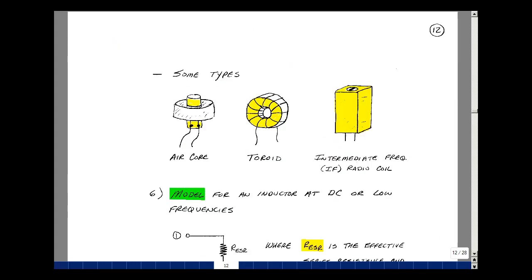What's shown here are some sketches of various types of inductors. This one's called an air core inductor, where the windings of the coil are around a paper tube. This one's called a toroid inductor. It has a piece of iron with wrappings of the wire around this donut shape.